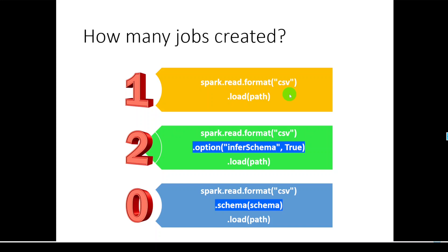As per Spark's definition, the Spark engine will create a job whenever it has to touch the data residing in a file. In the first method, when we read the CSV file, Spark needs to know the number of columns to define the DataFrame. So it scans the file and fetches only one record to calculate the number of columns. It has to touch the data file only once, so it creates one job.